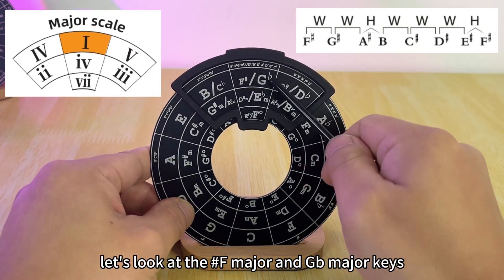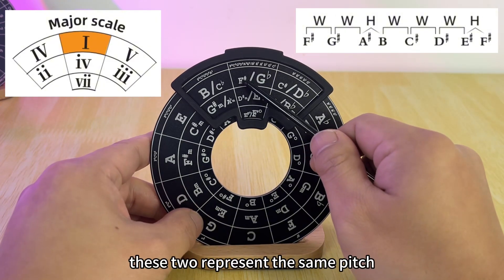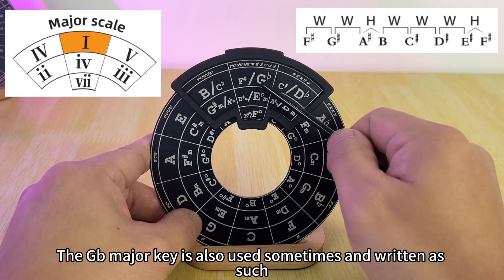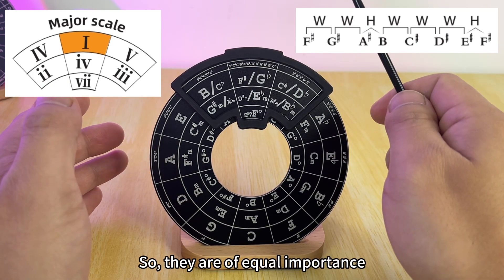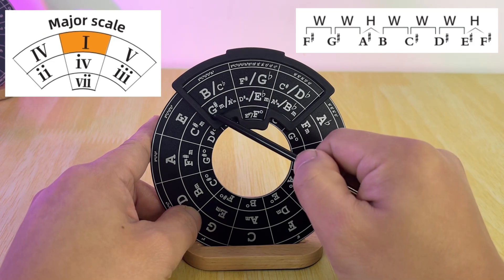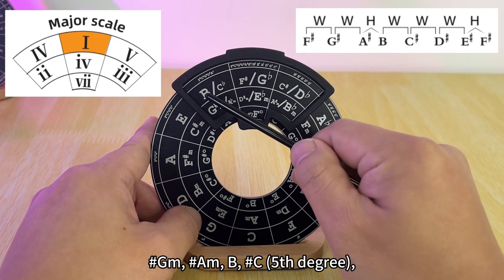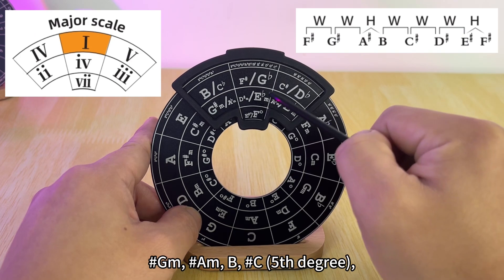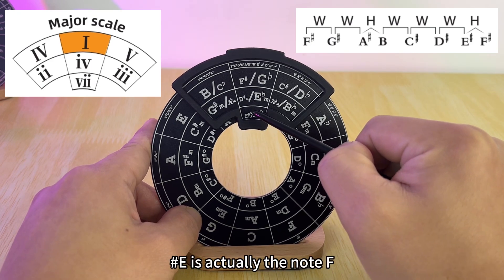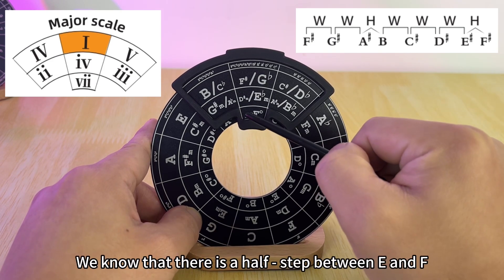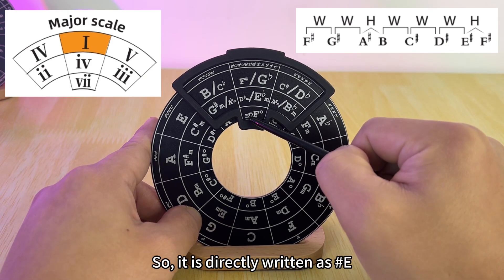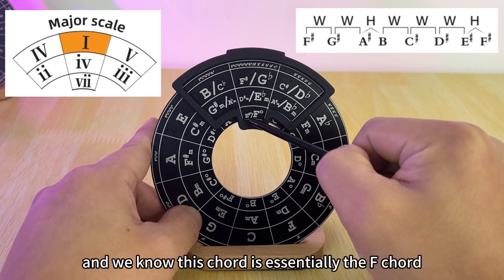Now let's look at the F sharp major and G flat major keys. Actually these two represent the same pitch, but we use the F sharp major key more frequently. The F sharp major key has six sharps. Let's look at the chords in the F sharp major key: F♯, G♯m, A♯m, B, C♯ fifth degree, D♯m sixth degree, E♯ diminished seventh degree. In terms of pitch, E sharp is actually the note F. We know that there is a half step between E and F and between B and C, but when writing note names we don't repeat the letters, so it is directly written as E sharp and we know this chord is essentially the F chord.